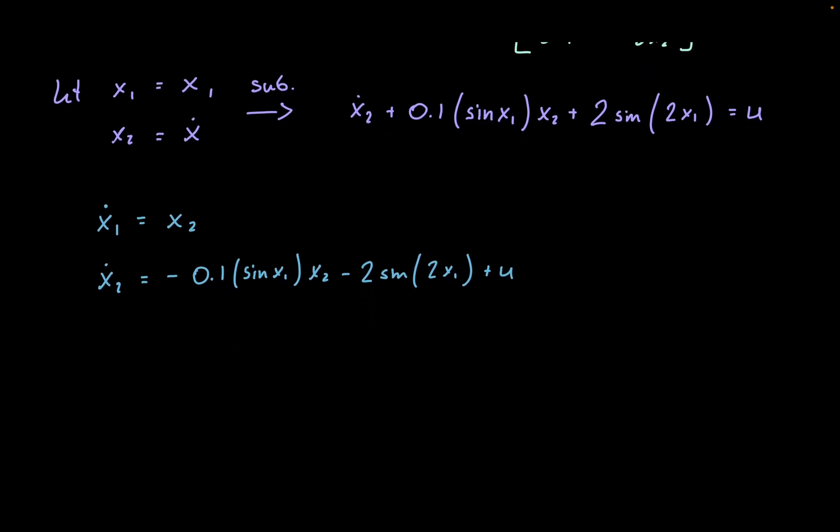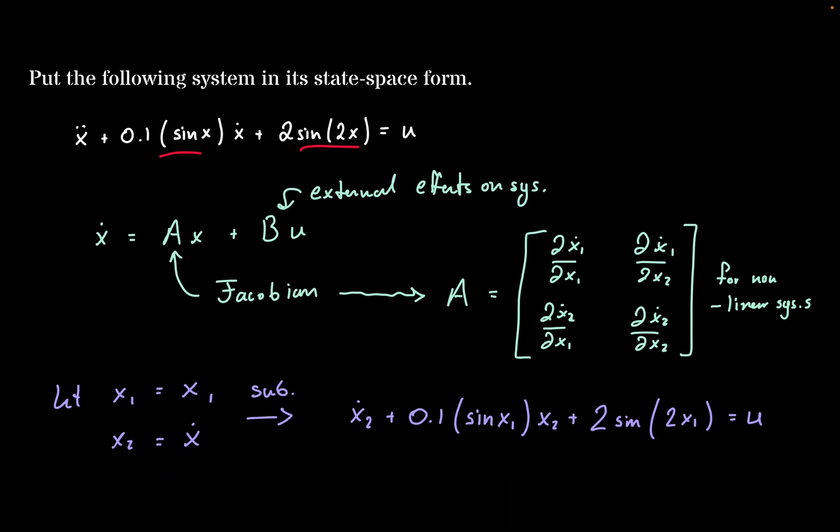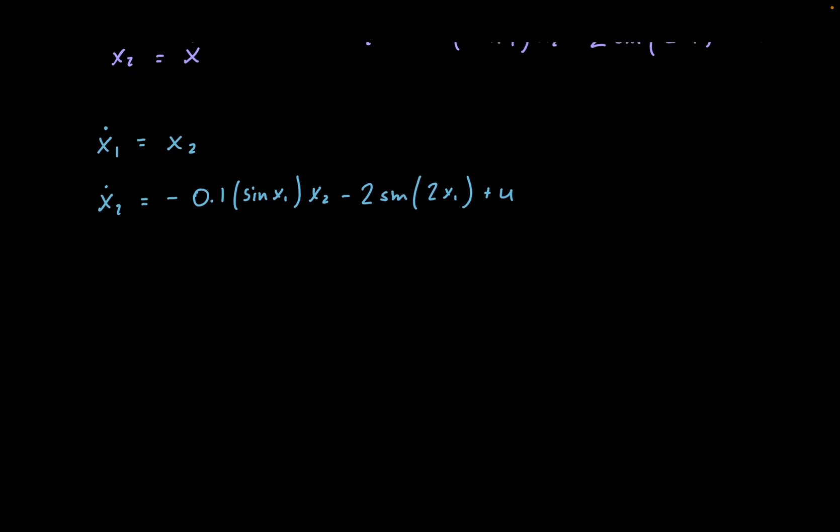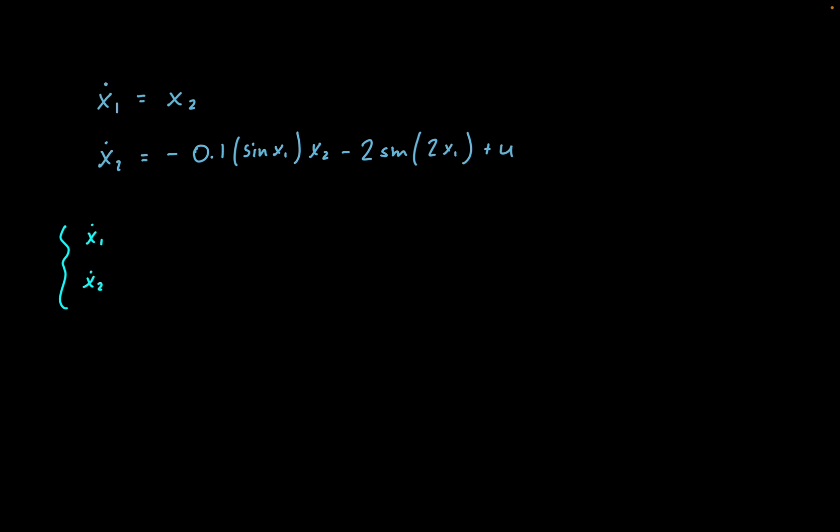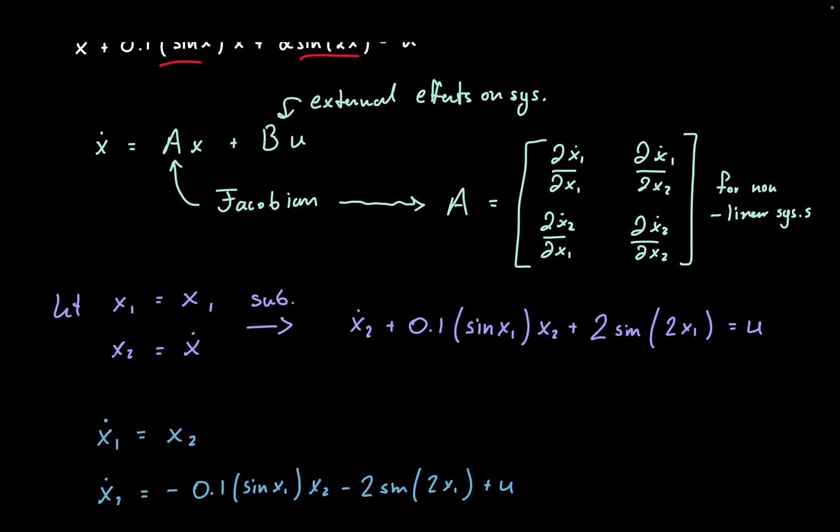Now we are ready to put this in our state-space form. The first thing that we have in our state-space format is x dot, which is going to be a vector of all of our x dots. So we'll have x1 dot and x2 dot, and then next is the Jacobian matrix. This is where we follow that partial derivative format that we have up here.